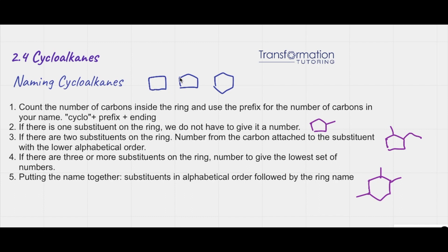This ring has one, two, three, four, five carbons — it's cyclopentane. This next one is cyclohexane.